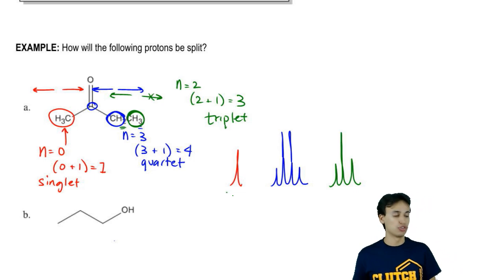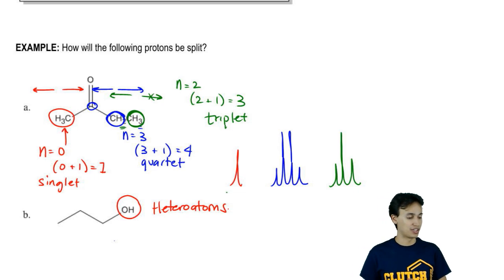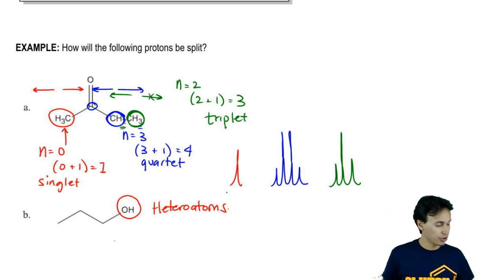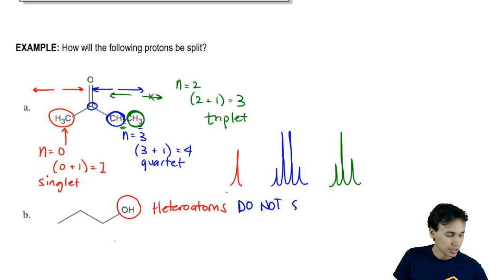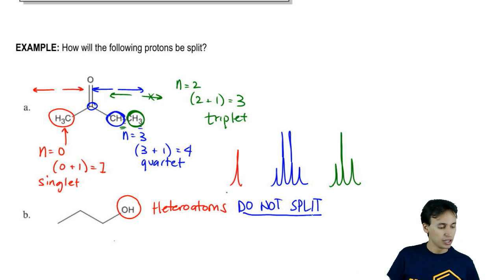And just so you know, B actually comes with one special instruction before you can solve it, which is that it turns out that heteroatoms have a special rule. Heteroatoms – do you guys remember what a heteroatom is? It's important for the rest of this course. Heteroatoms are just noncarbon atoms. So that would be nitrogen, sulfur, oxygen, phosphorus, et cetera. Heteroatoms, this is a big deal, do not split.